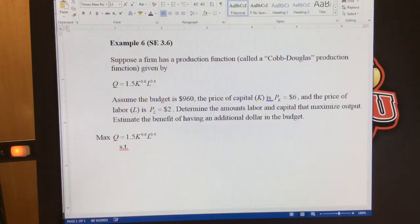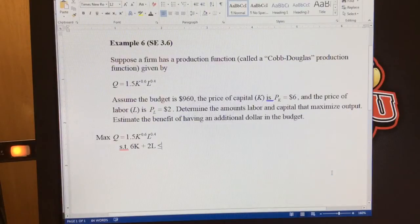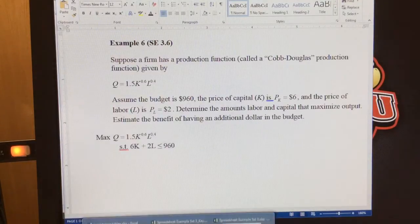Subject to is, in a sense, a budget constraint. So for every good capital I spend, I've got to spend $6 times the amount of capital, plus $2 times the amount of labor. And that has to be less than or equal to 960. I can't exceed my budget. So that's my constraint optimization problem. Now I need to insert this into Excel.